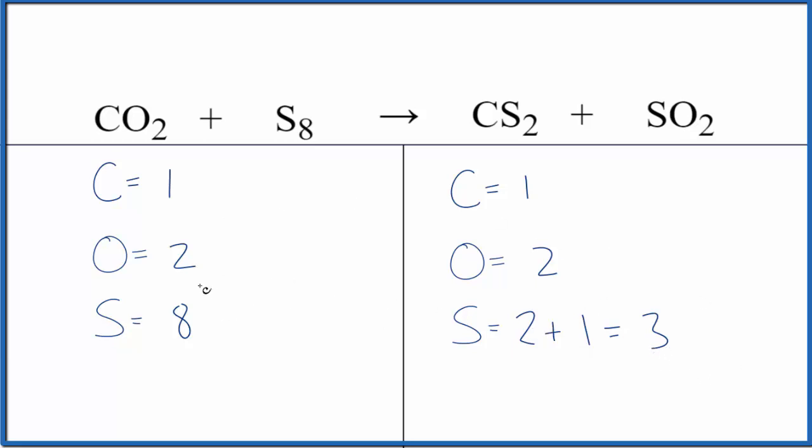What I eventually came to was I need to get some common number here that both of these go into. So eight and three, they both go into 24. I'm going to multiply this by three and get 24 here, so we have eight times the three.